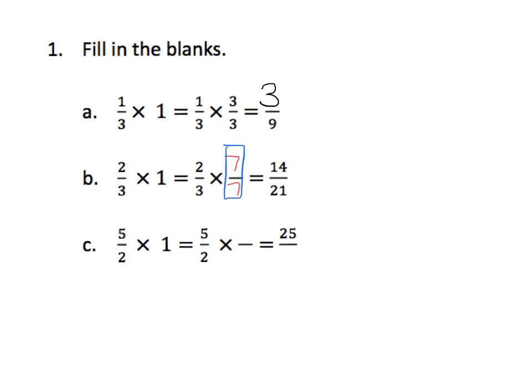And the last one: 5 halves times 1, so the value won't change. We can see that the numerator is going to be 25, so we have to change this 5 into a 25, which means multiply by 5. By rule, the denominator also has to be 5, because we have to multiply by the number 1. So 5 halves times 5 fifths equals 25 over 10, or 25 tenths.